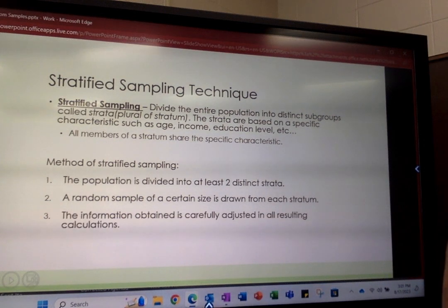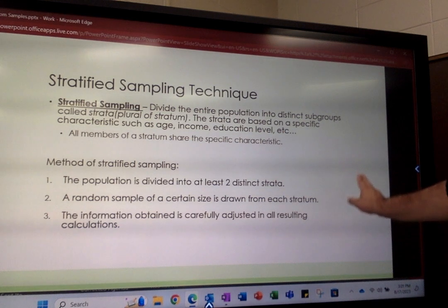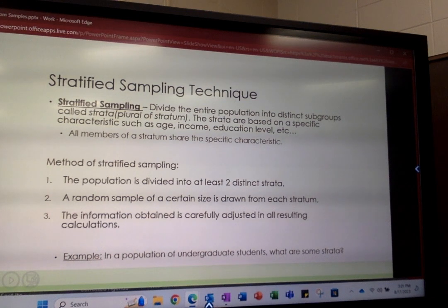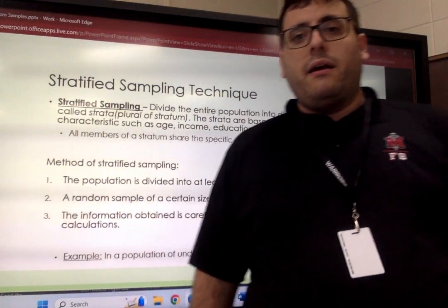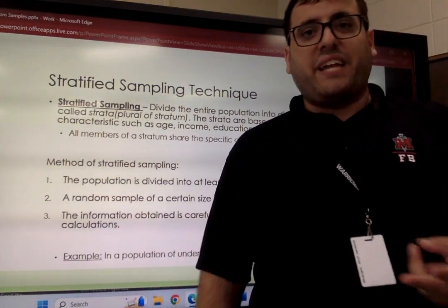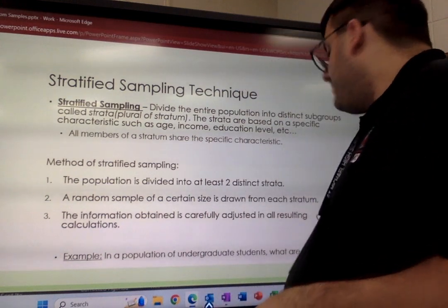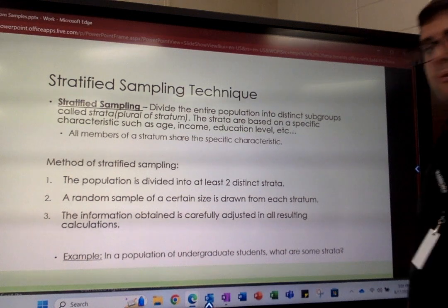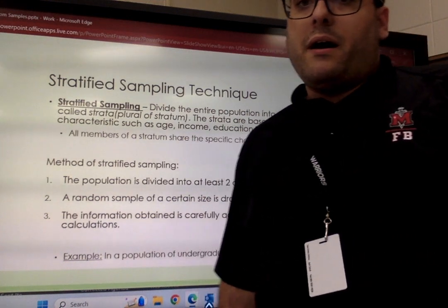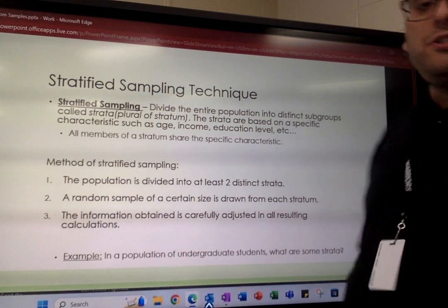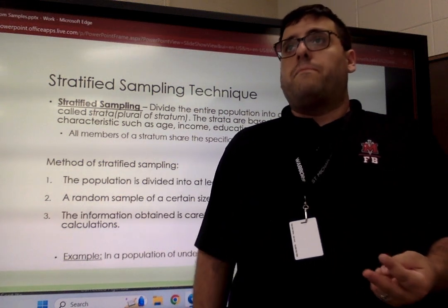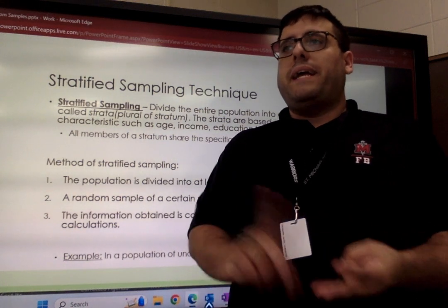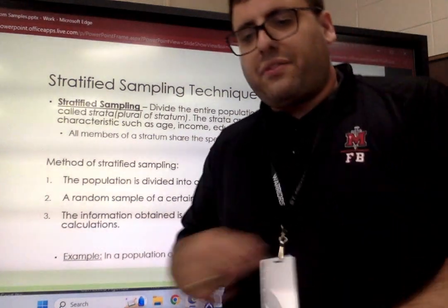An example of using a stratified sample is a population of undergraduate students. To create strata, I could separate them by age, by classification — freshman, sophomore, junior, senior — or by what student organizations they're in, such as student government, student programming, the debate team, esports, student athletes, or cheerleading.